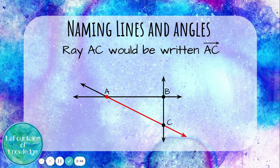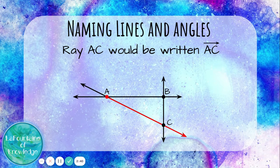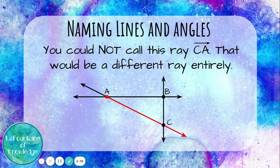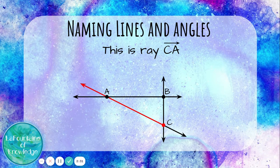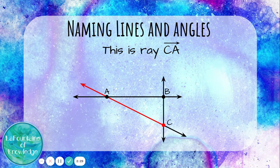Ray AC would be written AC with a little ray above it. Notice there's only an arrow on one end. You could not call this ray CA. That would be a different ray entirely. This is ray CA. It goes in the opposite direction.